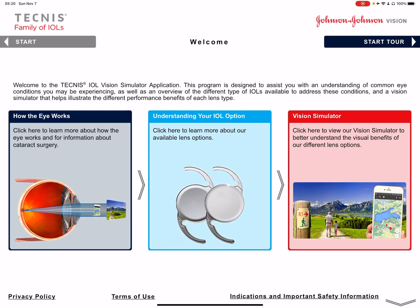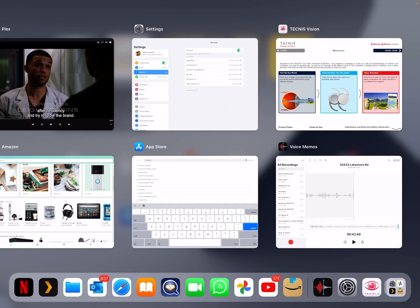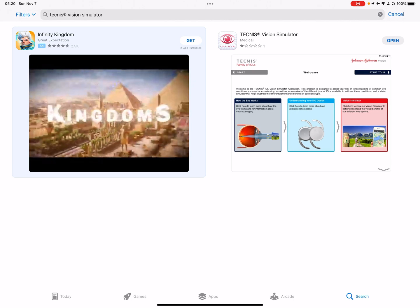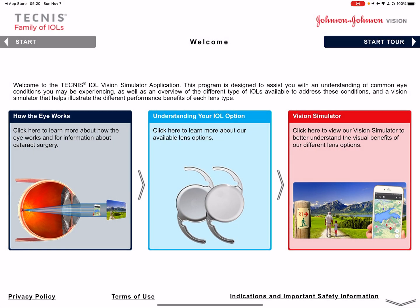Good morning, I'm Dr. Yusuf. I'm going to walk you through the app made by J&J for choosing intraocular lenses for cataract surgery. It's a very nice app — you can download it for free from the App Store. Search for 'Tecnis' and that's the one. We'll walk through how the eye works, choosing the IOL, understanding it, and then the vision simulator.